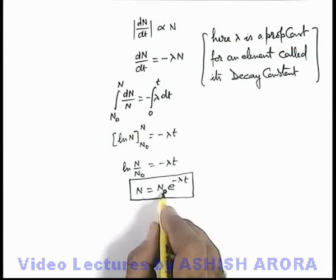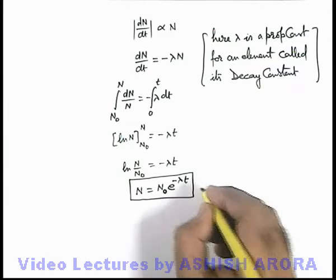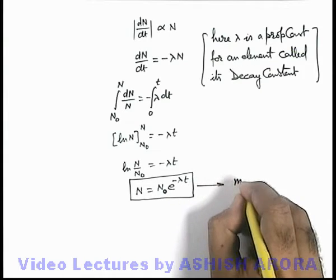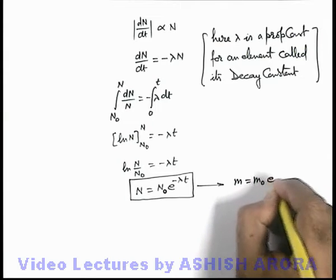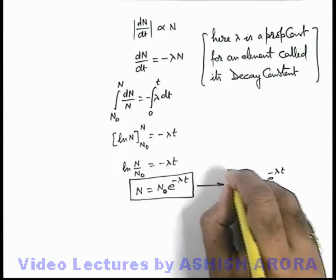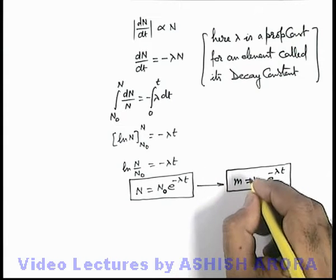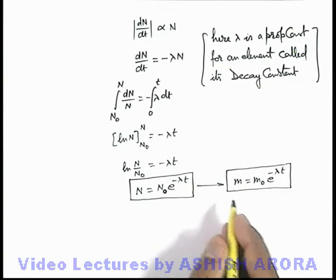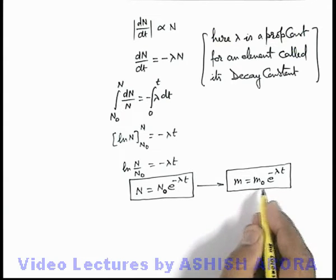And as this is a relation in number of nuclei of radioactive element as a function of time, the same can be rearranged in terms of mass of radioactive element also as m is equal to m₀ e to power minus λt, because mass of radioactive element or any element is proportional to the number of nuclei in the sample.